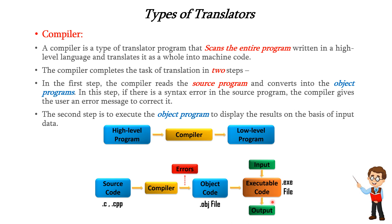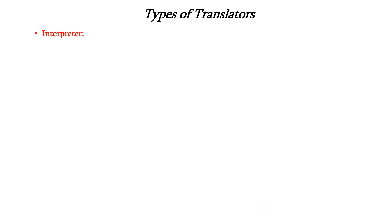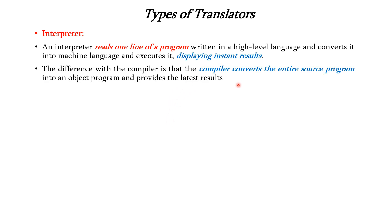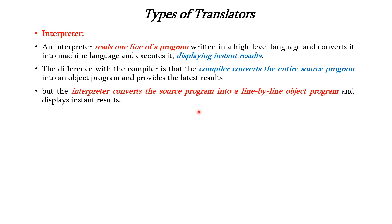The object file further takes input from the user and generates the output. This is the concept of compiler. Next is the interpreter. Interpreter reads one line of the program written in the high-level language, then converts it into the machine language and executes it, then displays the results immediately. The difference between the compiler and the interpreter is that the compiler converts the entire source code into the object code and provides the results. But the interpreter converts the source program into a line-by-line object program and then displays the instant results.